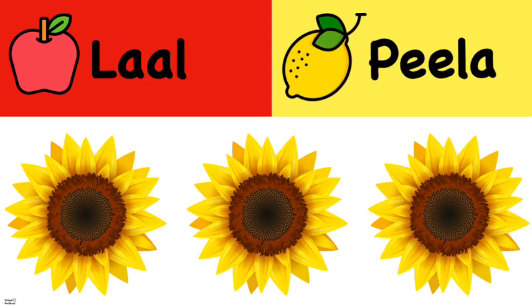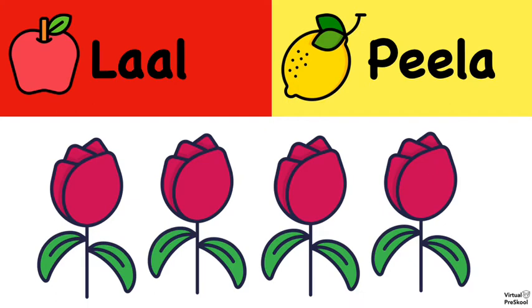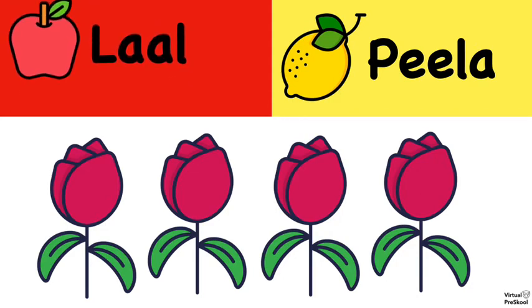Pila, right? They're yellow. And what color roses are these? Lal or Pila? They are red. Lal.